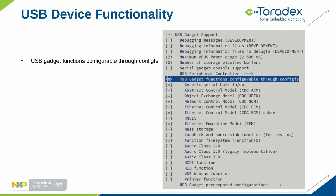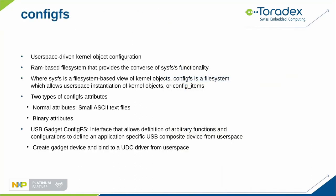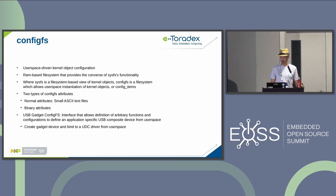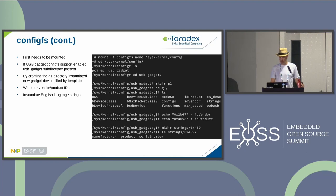USB device functionality in the kernel is the USB gadget, nowadays configurable through configFS. ConfigFS is a user-space-driven kernel object configuration system — a RAM-based filesystem that provides the converse to sysfs. Where sysfs exposes a filesystem view of kernel objects, configFS allows instantiating kernel objects from user space. There are two types of configFS attributes: normal small ASCII text files and binary attributes. The USB gadget configFS interface allows defining arbitrary functions and configurations to create application-specific USB composite devices.